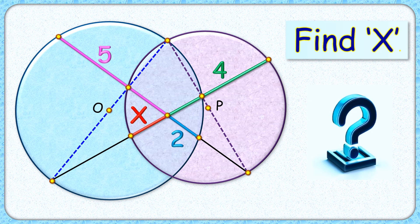Welcome everyone to this interesting question where two circles with center O and center P are intersecting each other. The blue circle's diameter AB is intersecting the purple circle at point D. The diameter BC of the purple circle is intersecting the blue circle at point E.